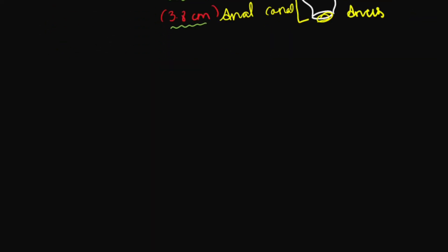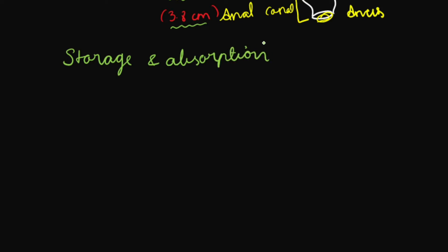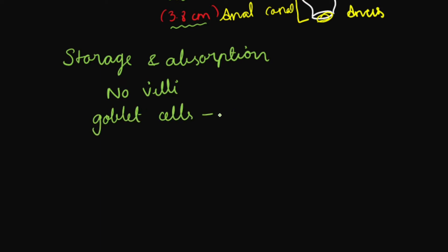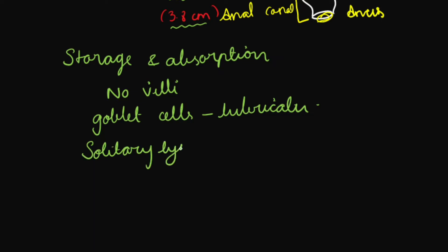Regarding the structural adaptation of the large intestine: it is mainly for storage and absorption of fluids and solutes. There are no villi, but the mucosa has epithelium which is very absorptive in nature. Lubrication is maintained with the help of goblet cells present in the mucosal layer. For lymphatic follicles, the large intestine has mainly solitary lymphatic follicles, which help in protection against bacteria and other organisms.